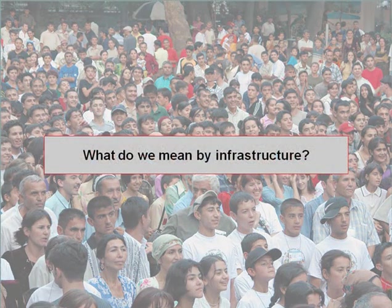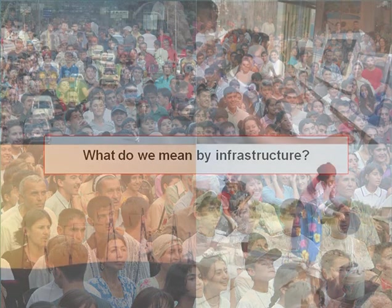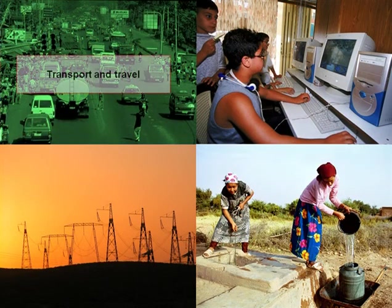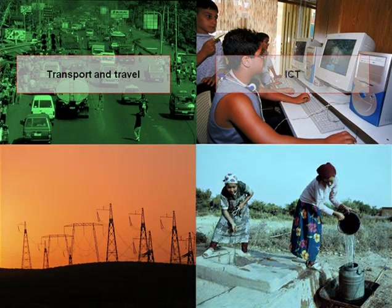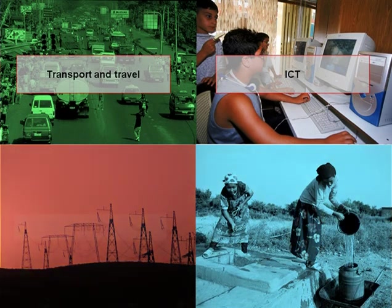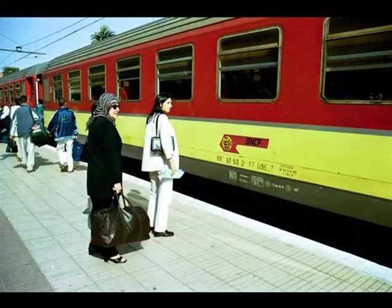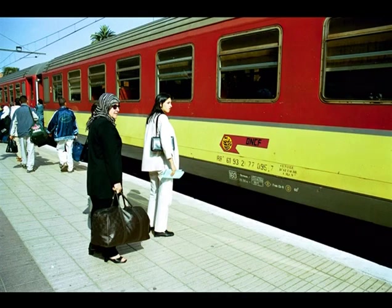What do we mean by infrastructure? This module will be focusing on four areas of infrastructure: transport and travel, information and communication technology, energy, and water. It will focus not on the infrastructure networks within these areas, but in particular on the services that these infrastructure networks deliver, what is referred to as infrastructure services.